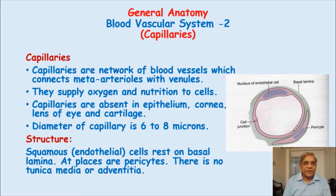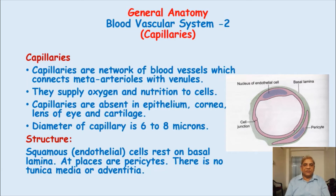Capillaries are the network of blood vessels which connect the meta-arterioles with the venules. Meta-arterioles, as I told you in the last lecture, are the terminal arterioles — around 15 to 20 microns in size. They take origin from the side of terminal arterioles and immediately break up into capillary plexuses. The arterial end of capillaries connects through terminal arterioles or meta-arterioles.